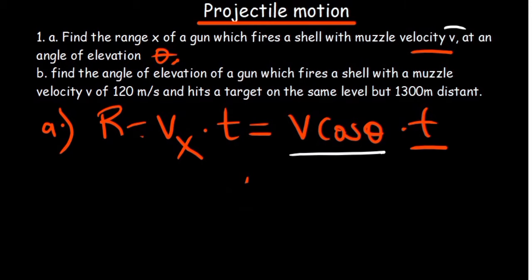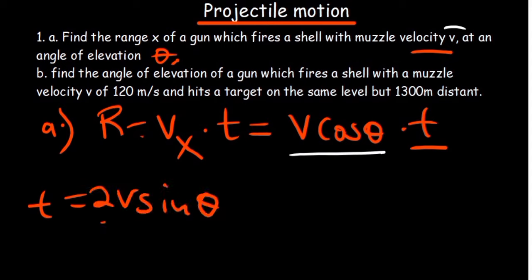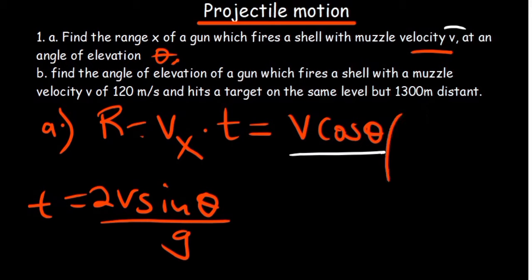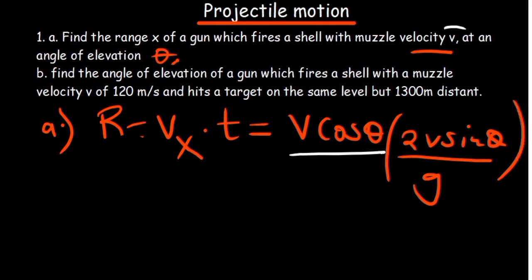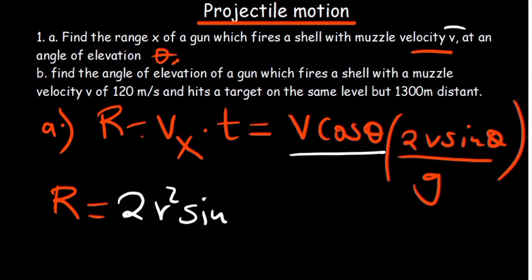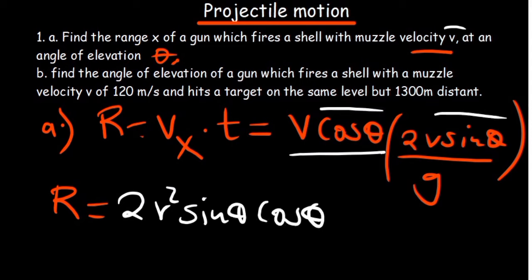The total time of flight is double the time to reach the maximum point: T = 2V sine theta divided by G. Substituting into the range formula, we get range = V cosine theta × (2V sine theta / G), which simplifies to range = 2V² sine theta cosine theta divided by G.